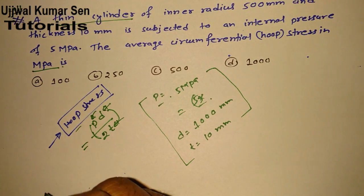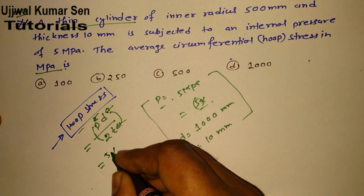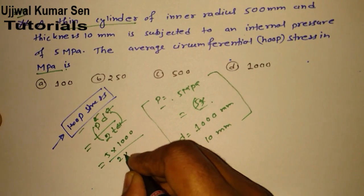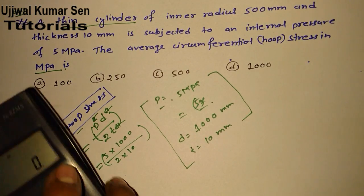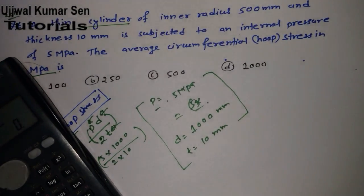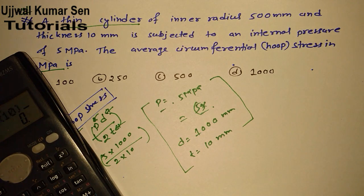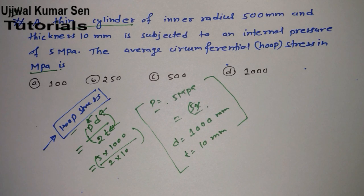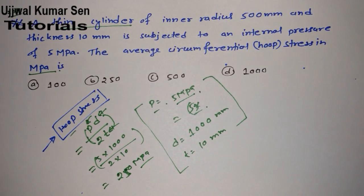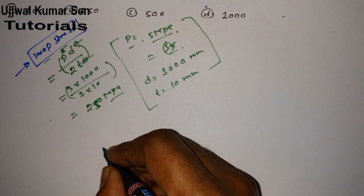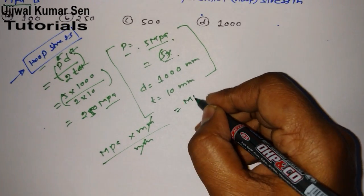Now substituting: σ_h = (5 × 1000) / (2 × 10) = 5000/20 = 250 MPa. The unit works out because pressure is in MPa and the mm units in numerator and denominator cancel, leaving the answer in MPa. So the hoop stress is 250 MPa.